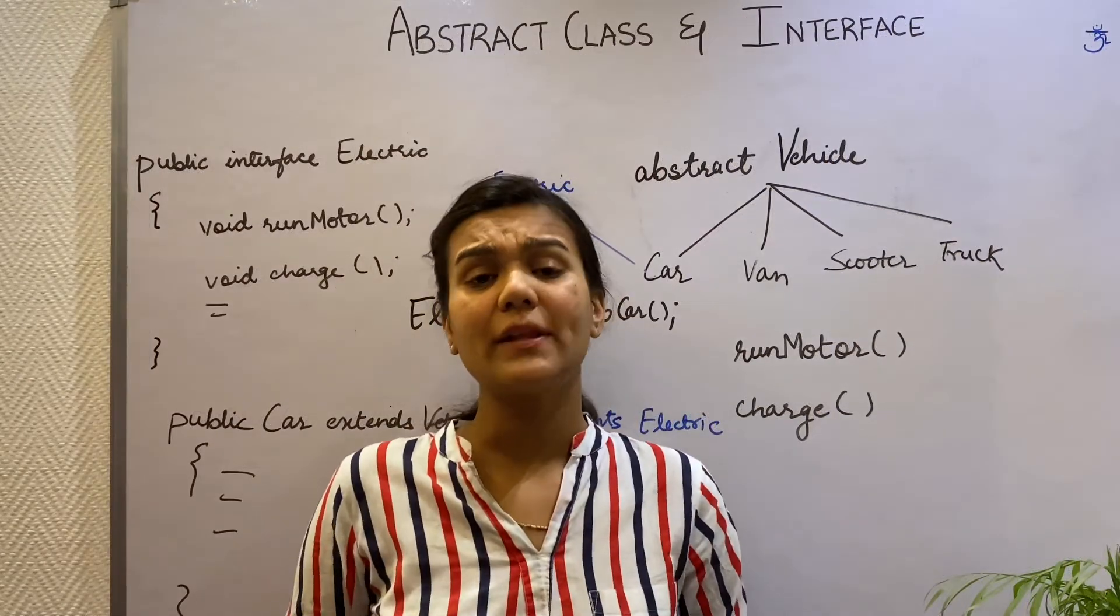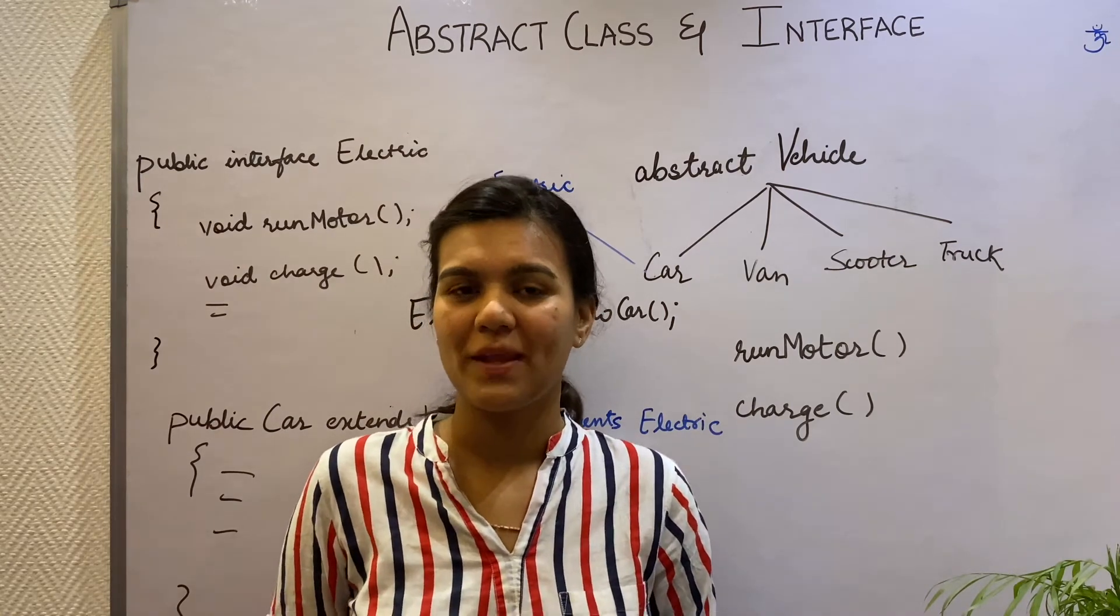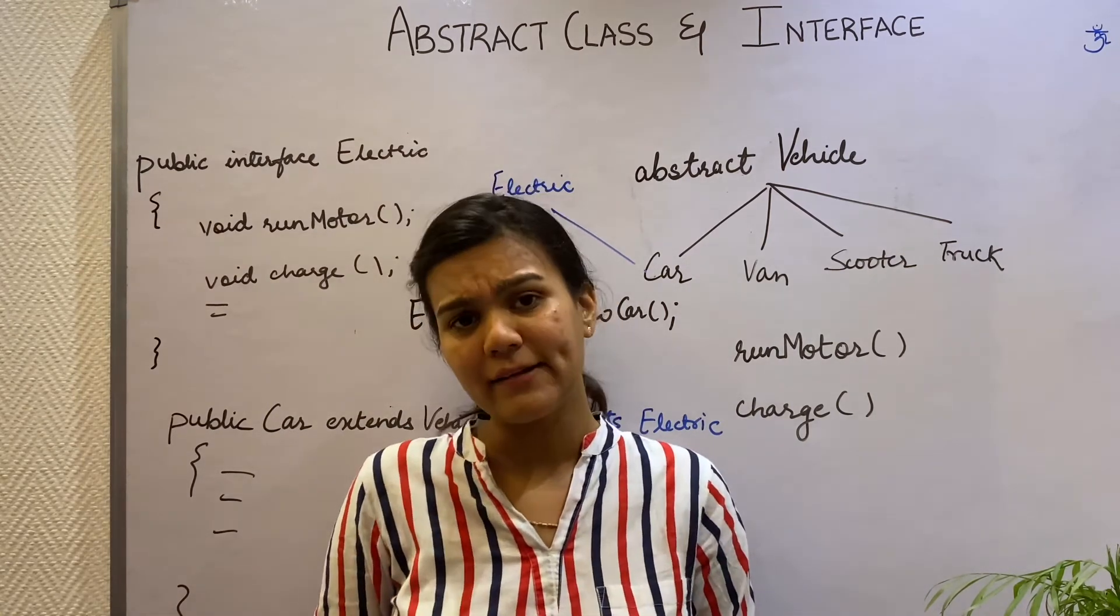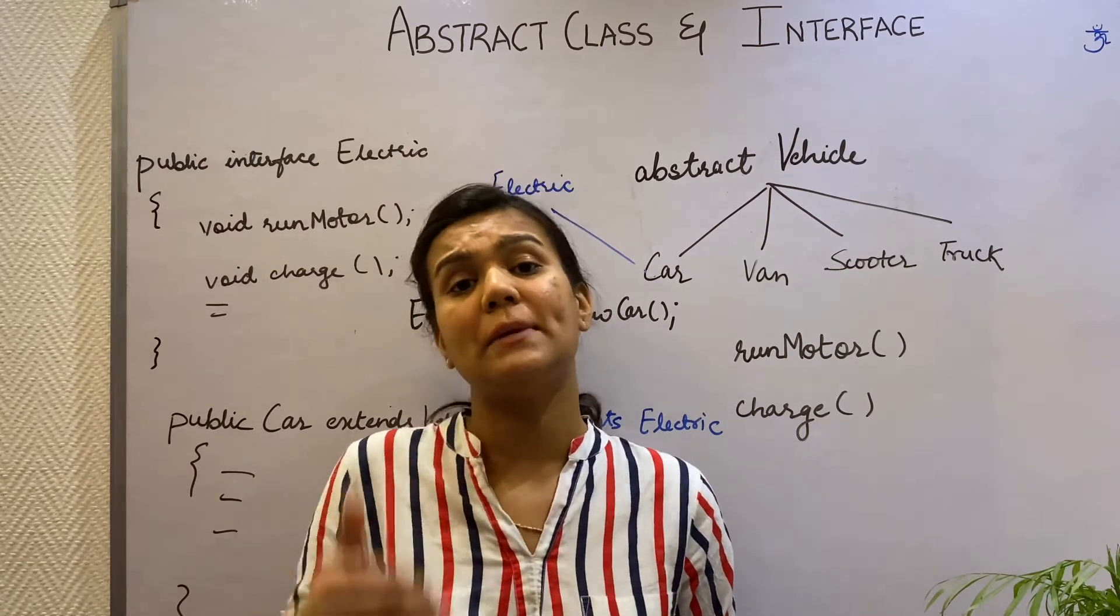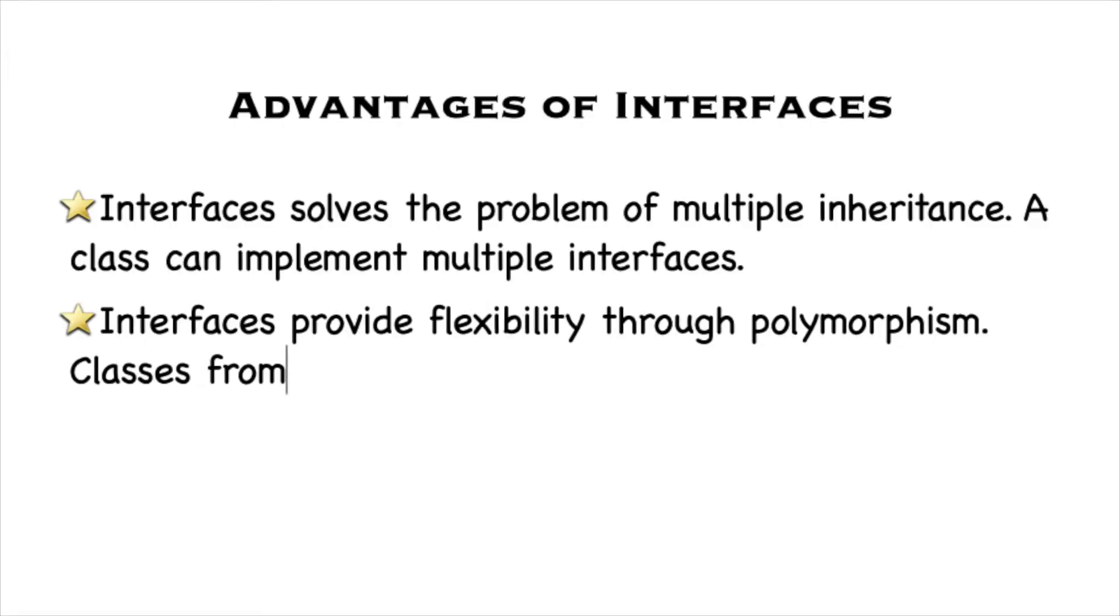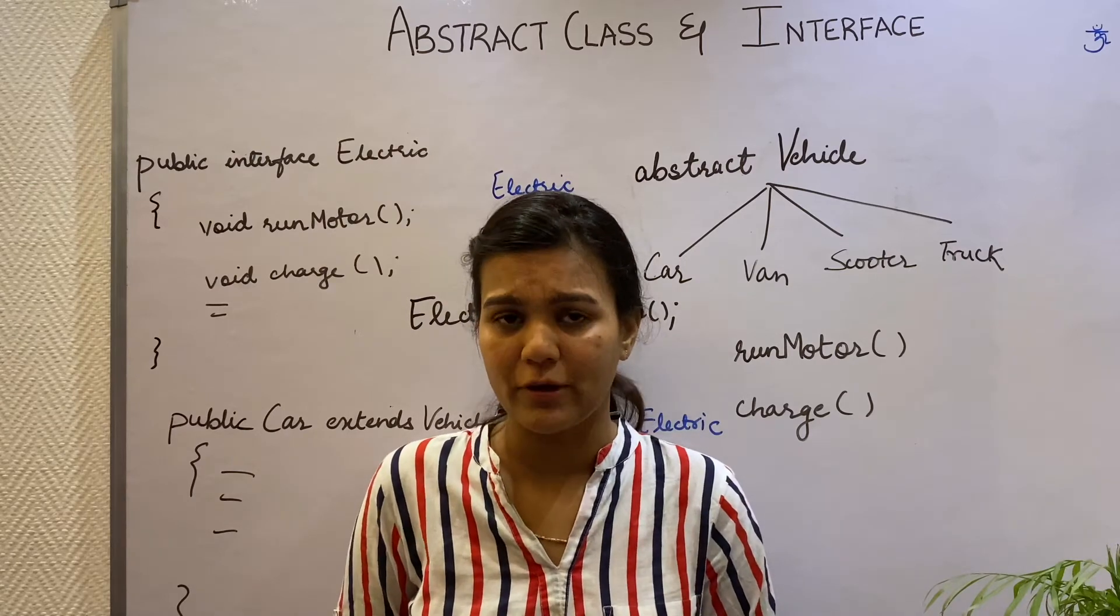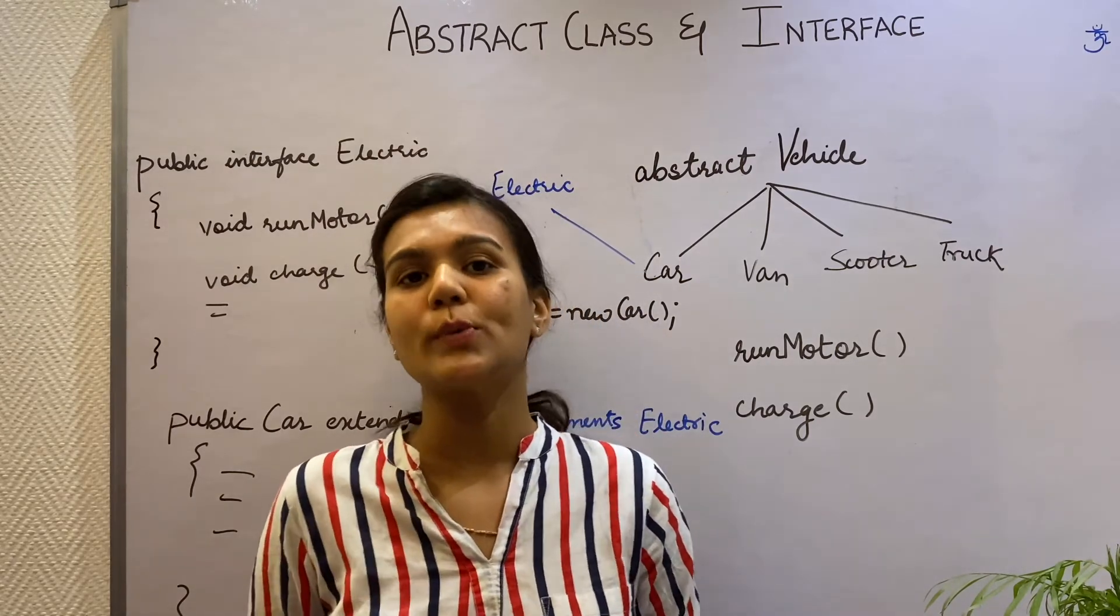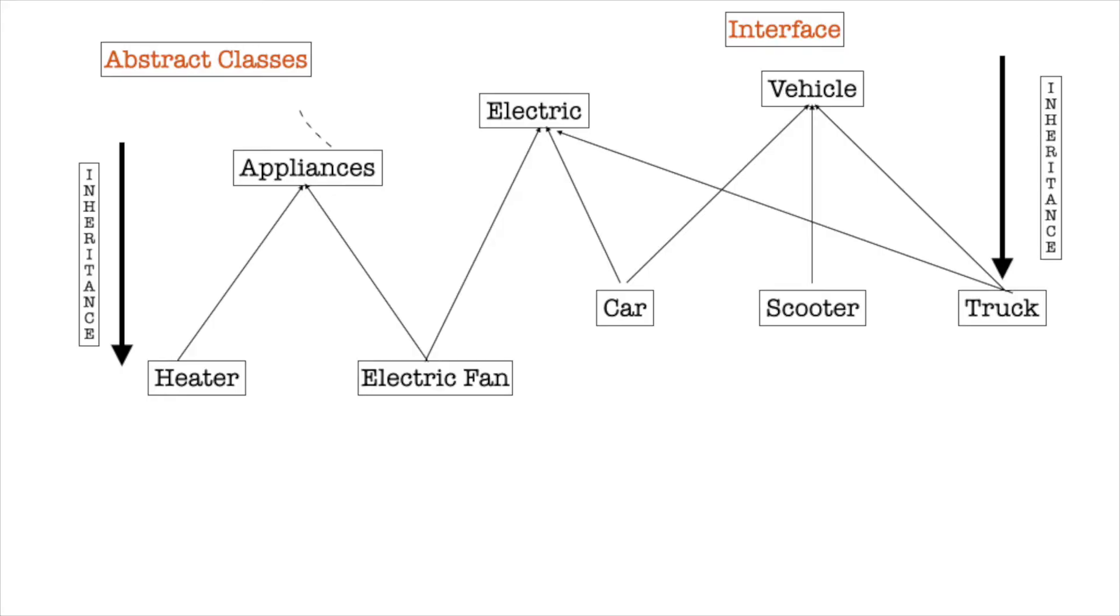Secondly, the interfaces provide ultimate flexibility through polymorphism. What this means is that in inheritance, the class extending the other class has to be of the same inheritance hierarchy. But in interfaces, classes from different inheritance hierarchy can also implement it. This way, a car can have electric behavior and any other classes that want to exhibit electric behavior can also implement the electric interface. So for example, an electric fan can also implement the electric interface.